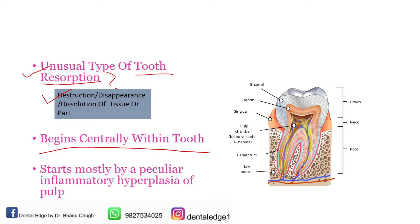What is basically happening is: if this is the tooth structure, there is peculiar inflammatory hyperplasia of the pulp. This pulp undergoes inflammatory hyperplasia, which leads to resorption of the dentine on its pulpal surface. This may lead to a narrow band of remaining dentine and may also extend to the enamel. So basically, resorption is starting centrally from the pulp and leading to resorption of the dental hard tissues.